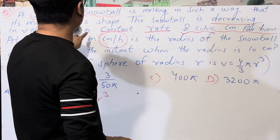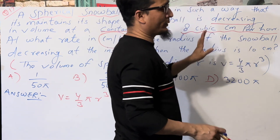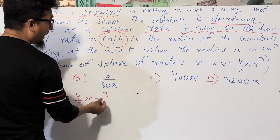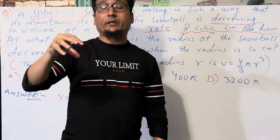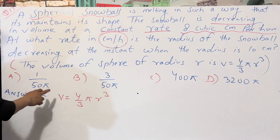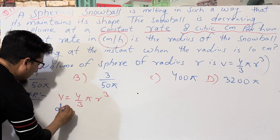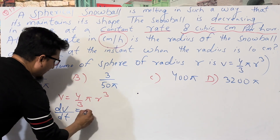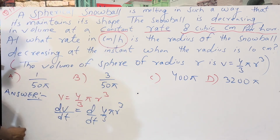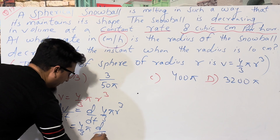The volume is decreasing at a constant rate of 8 cm³ per hour. We introduce time t, and we want to find dV/dt — not dV/dr. So differentiating both sides with respect to t: dV/dt = d/dt [(4/3)πr³], and (4/3)π comes out as a constant.